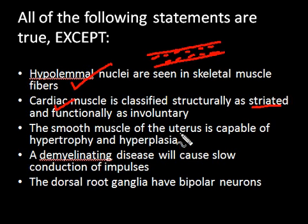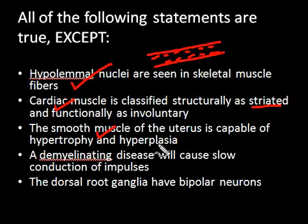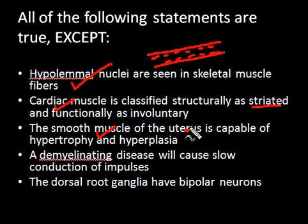The third statement: the smooth muscle of the uterus is capable of hypertrophy and hyperplasia. This is true because the uterus is one structure where muscle can undergo hypertrophy — where the size of an individual fiber increases — and hyperplasia — where the number of muscle fibers increases. It is only in the uterus where this is physiologically possible.